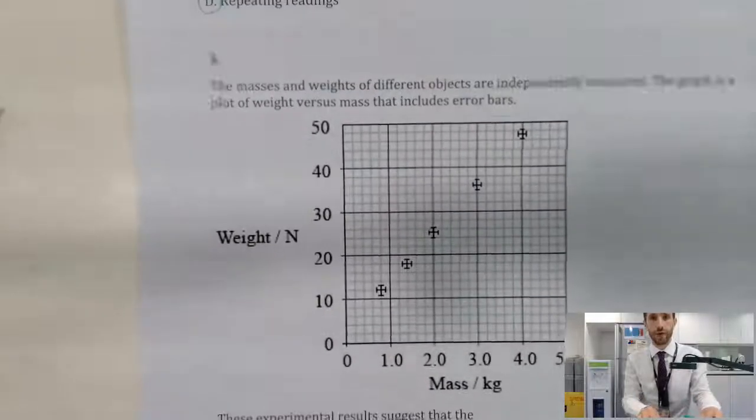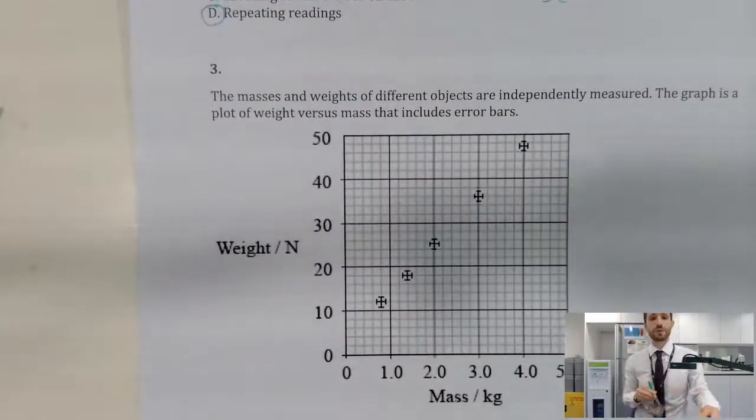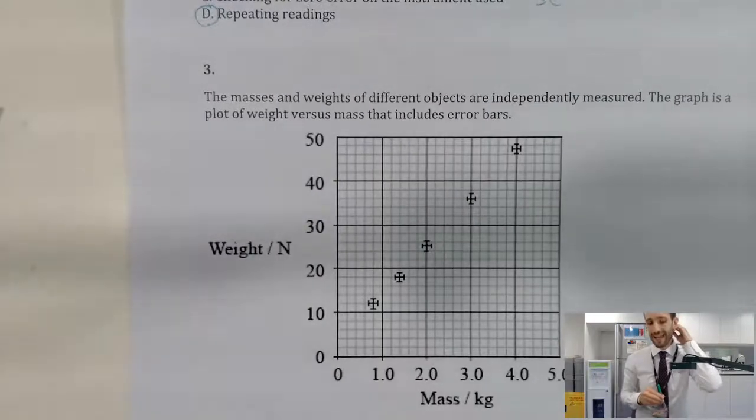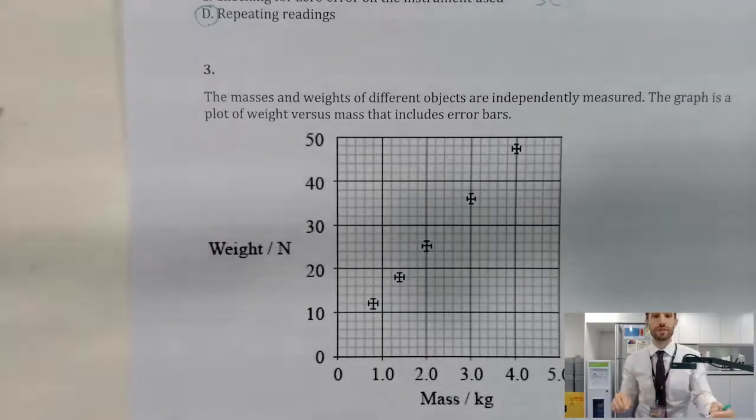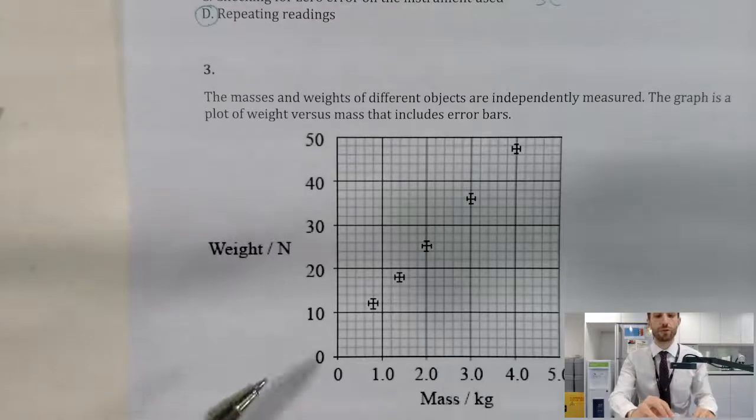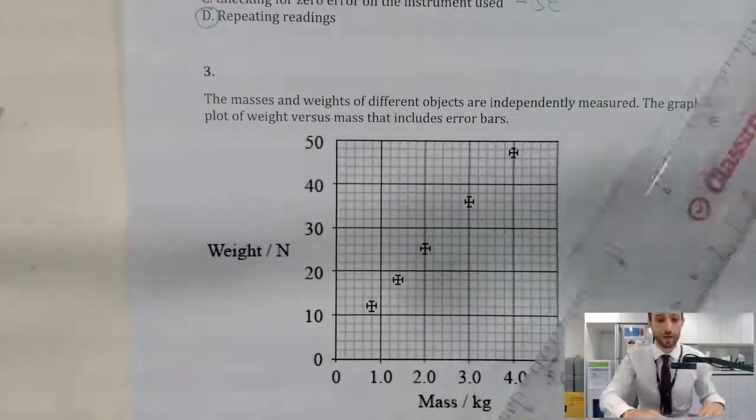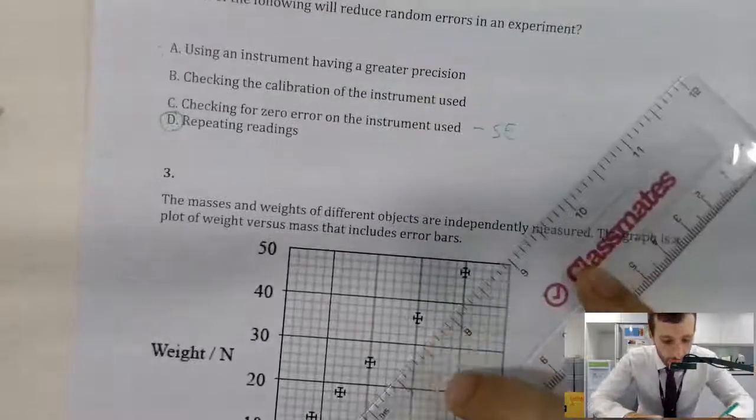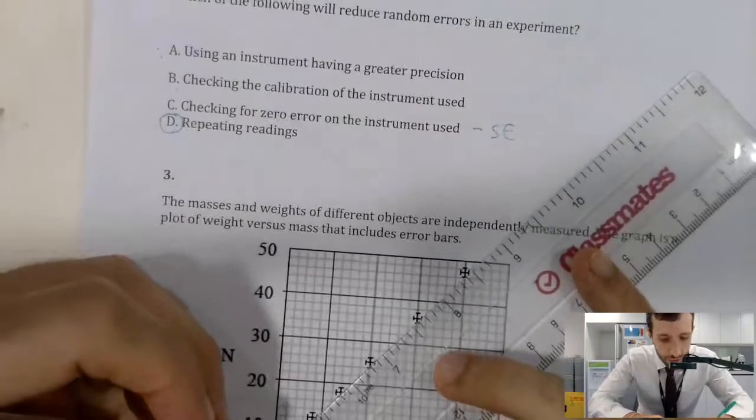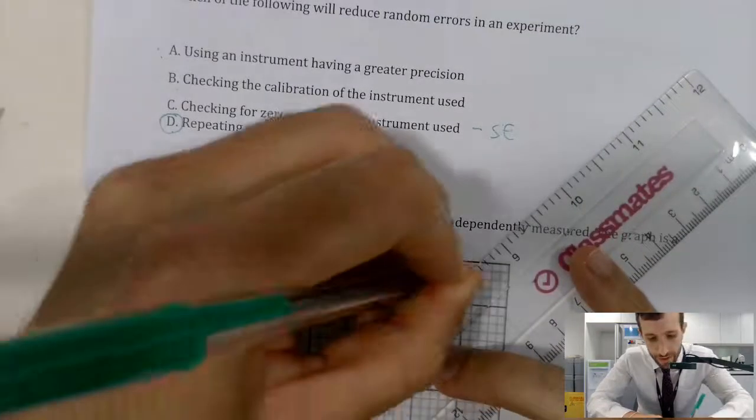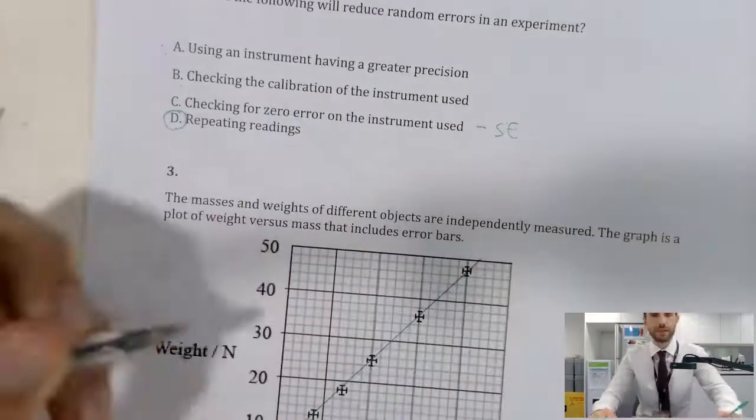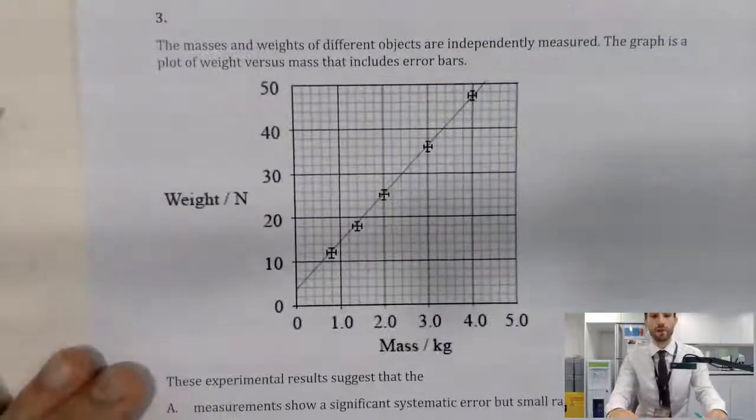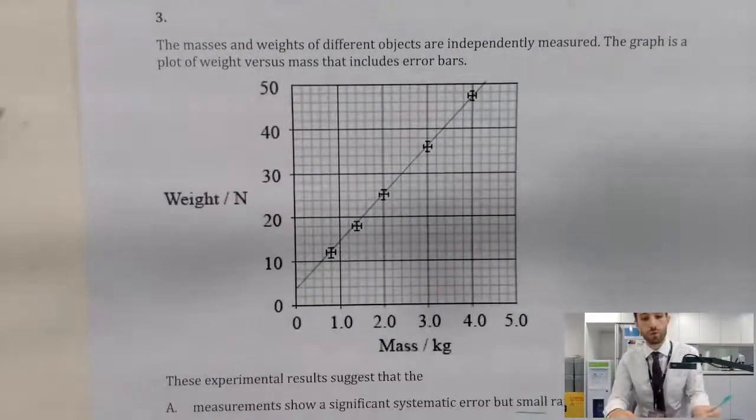Let's look at number three. Again, we have a graph. We've got masses and weights, and what we're obviously expecting, again, is that this thing is going to go through the zero origin. And again, that's why it's really good if we draw our line. And we should see, very similar to question one, that actually we've got a nice line of data, low random error, small random error.